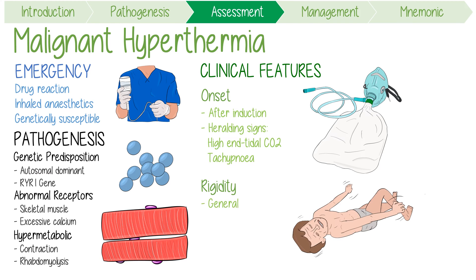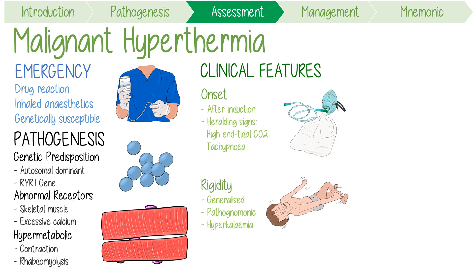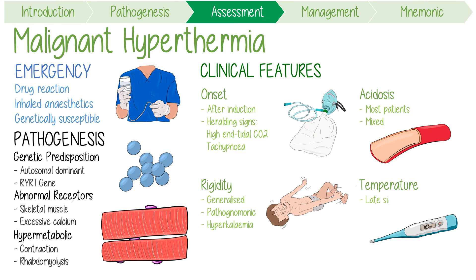Rigidity is generalized, and in the presence of neuromuscular blockade it is considered pathopneumonic of this disease. Associated rhabdomyolysis from contractions can induce hyperkalemia as well. Acidosis will develop in most patients and is usually a mixed metabolic and respiratory acidosis. A high temperature is usually a later sign, with the mean temperature being about 39.1 degrees.